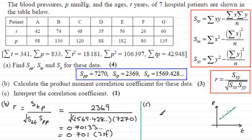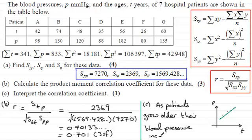But we need to answer this in context with what we're given and that is that as patients grow older their blood pressure increases. So do make sure you answer it in context. And there we go.